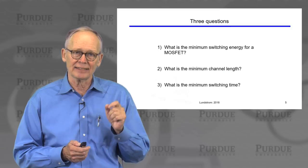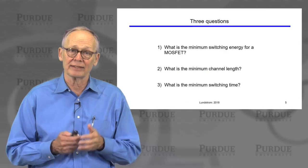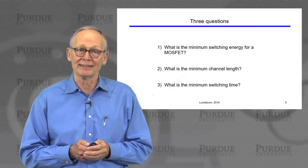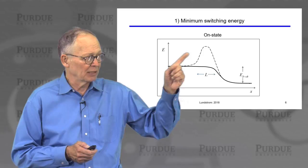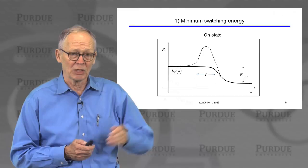Here are the three questions: What is the minimum energy that it takes to convert a one to a zero, or vice versa? What is the minimum channel length that a MOSFET could ever have and still operate as a MOSFET? And what is the minimum switching time? Let's begin with question one — the minimum switching energy.